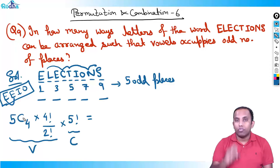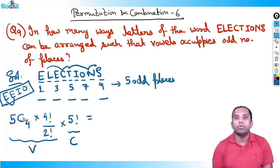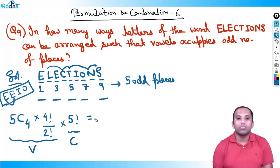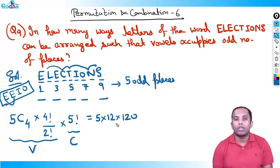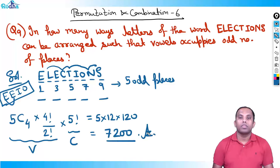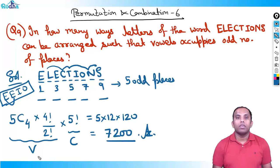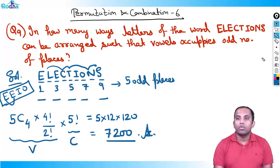5C4 equals 5C1 which equals 5. So the answer is 5 × 4! / 2! × 5! = 5 × 24/2 × 120 = 5 × 12 × 120 = 7200. The answer for this question is 7200.